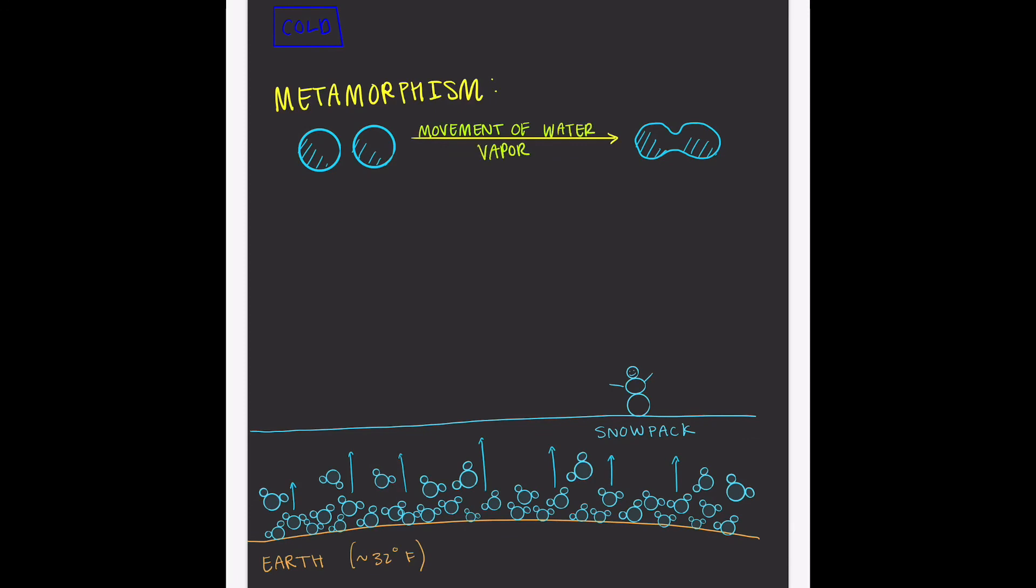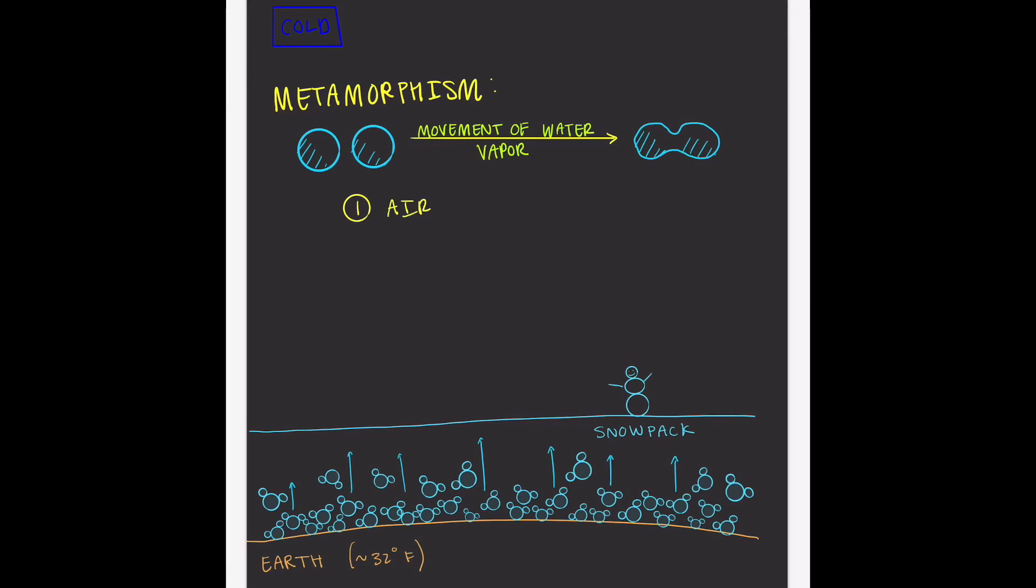And as we've established in this video, there are two primary factors that are going to impact that movement. The first is air temperature, and the second is the depth of the snowpack. In the next few videos, I'm going to talk about some specific types of snow grains that are formed as a result of snow metamorphism, and how those grains can contribute to or undermine stability.